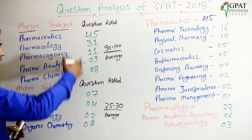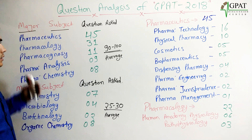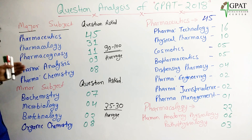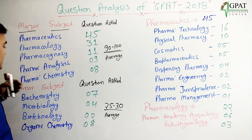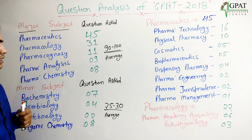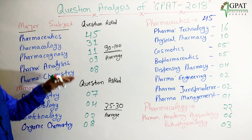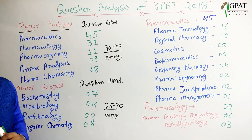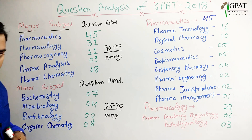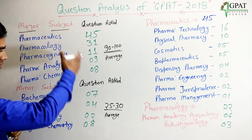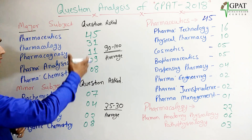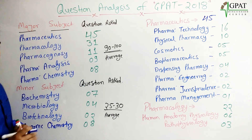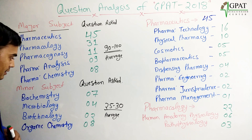So from pharmaceutics, pharmacology, pharmacognosy, pharmaceutical analysis, and pharmaceutical chemistry, approximately 90 to 100 questions are asked each year. Subject-wise evaluation in 2018 showed these question numbers.